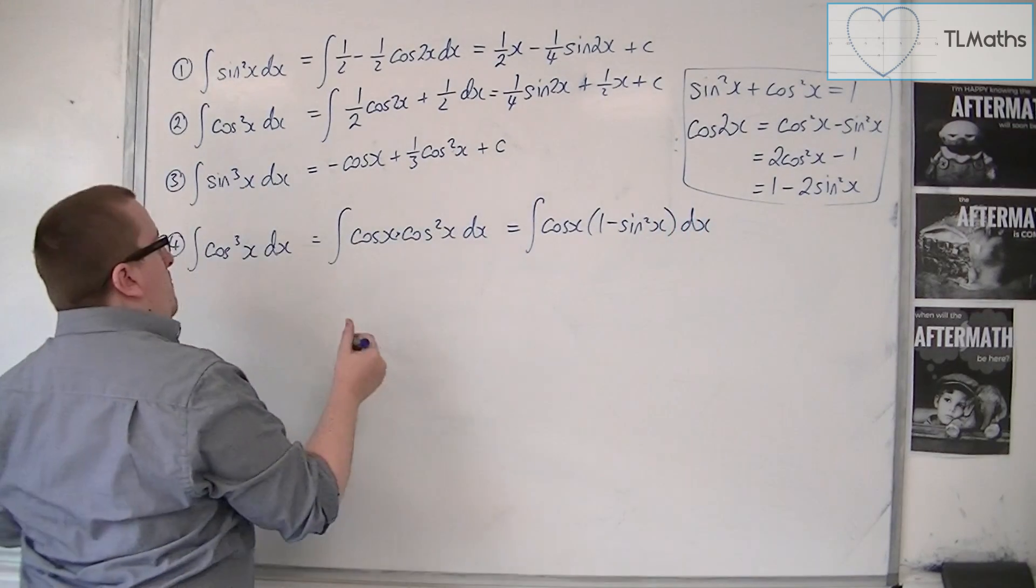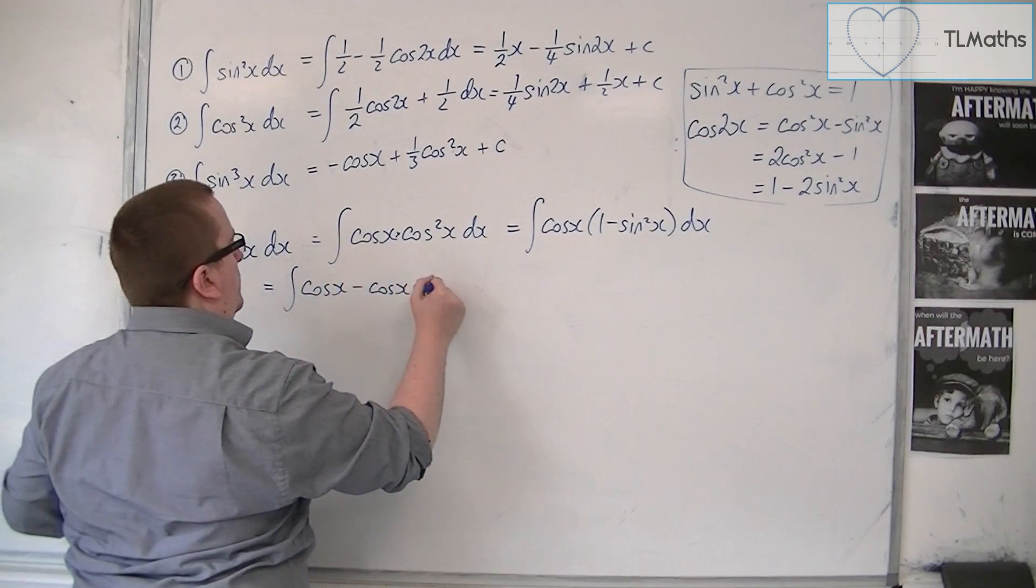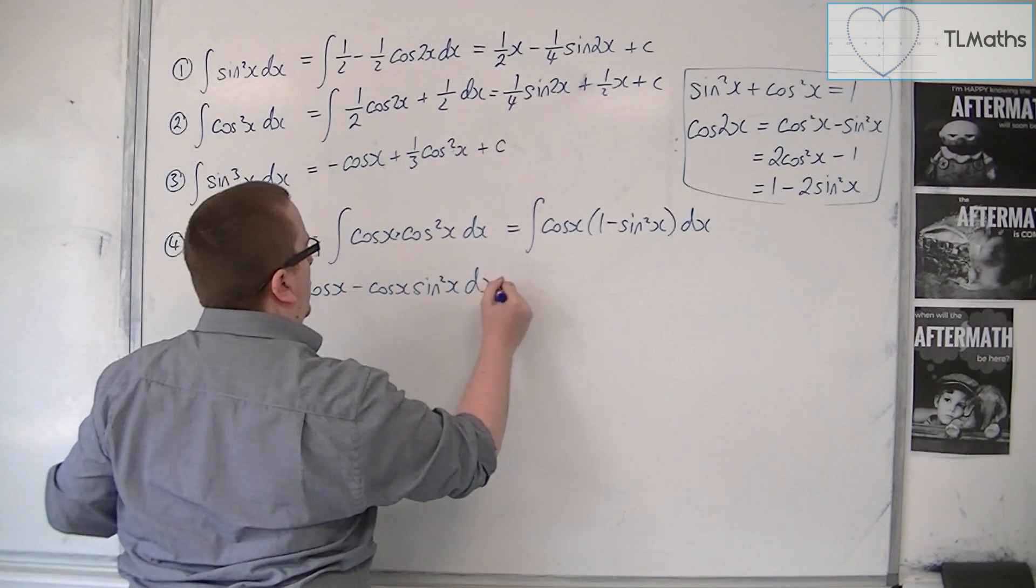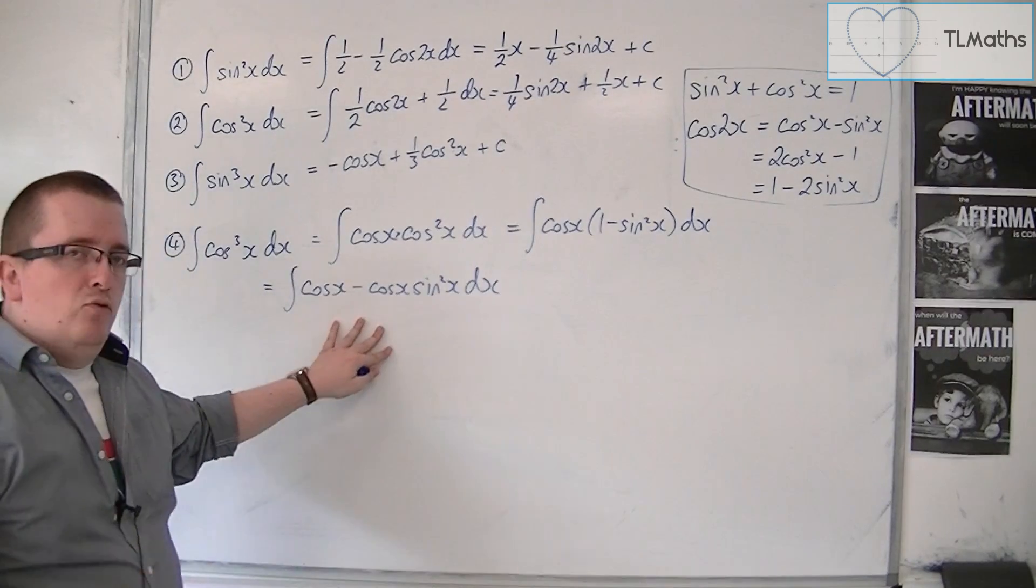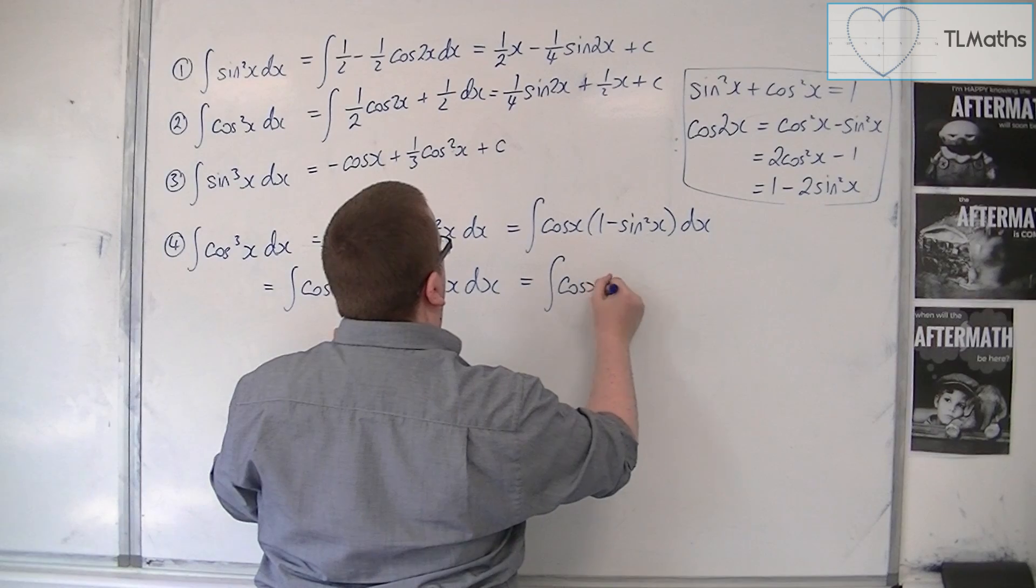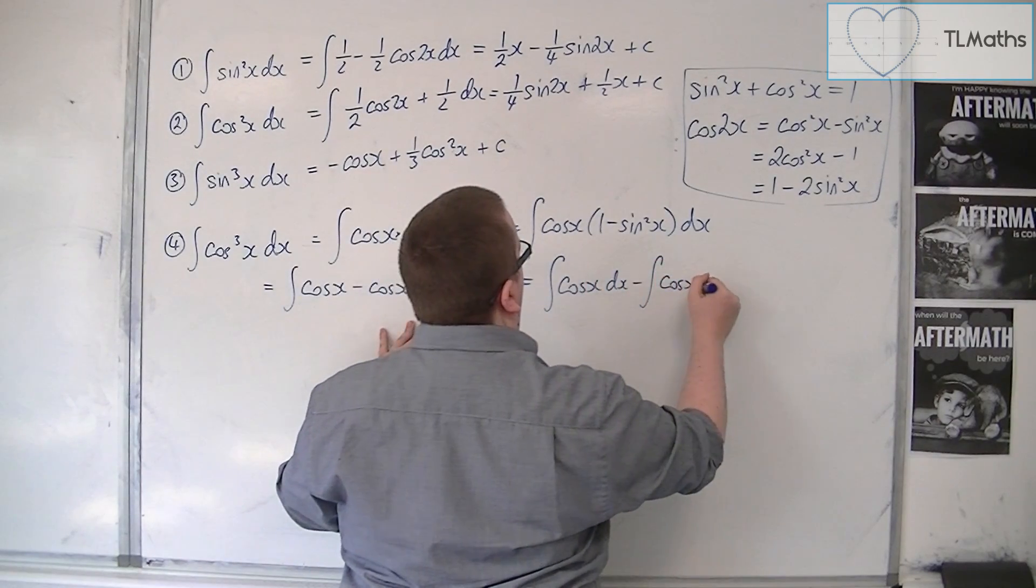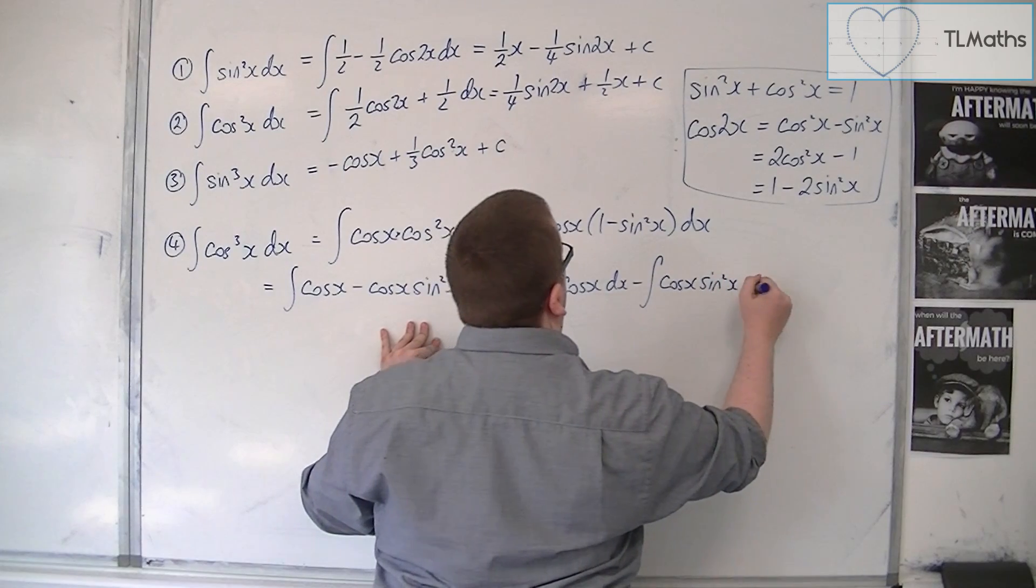You can then multiply out that bracket. And then I would probably separate this into two integrals. So you've got the integral of cosx dx. Take away the integral of cosx sine squared x dx.